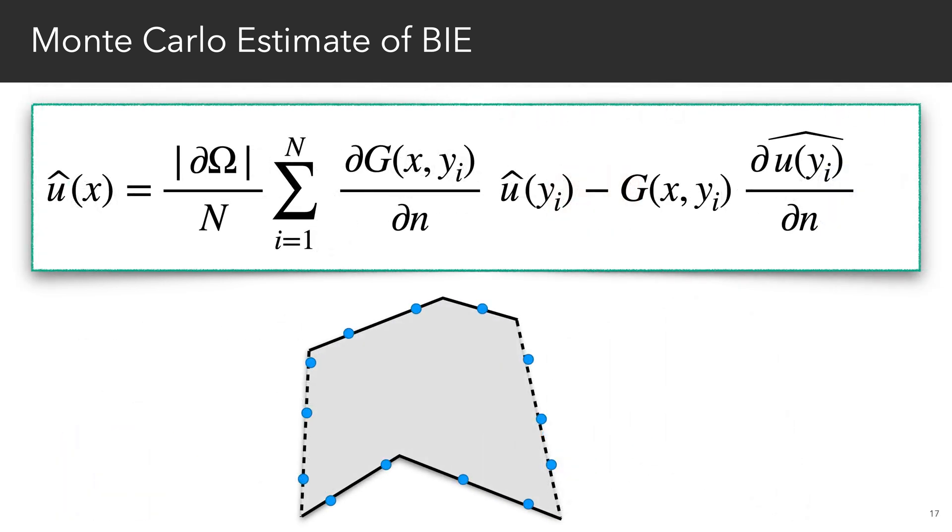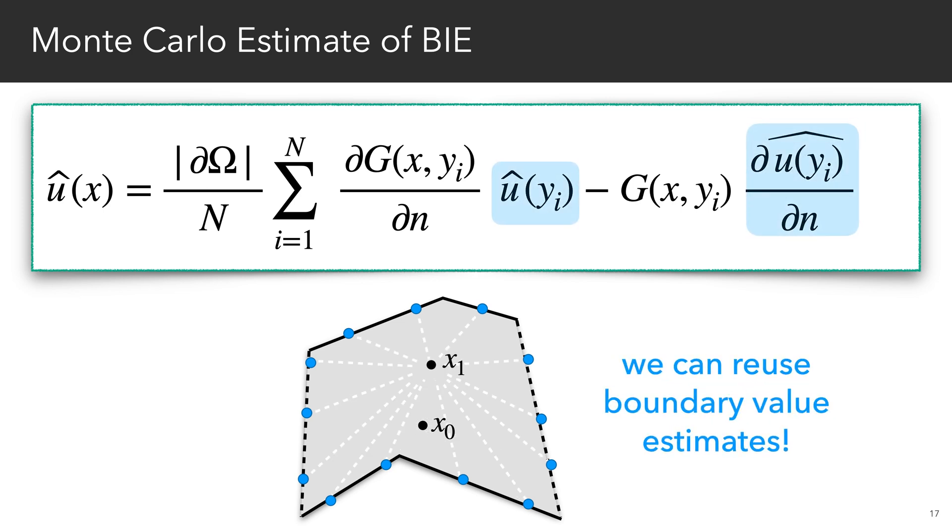Before we discuss how to estimate these boundary values, notice that the kernels in the Monte Carlo estimator for the boundary integral are the only part of the expression that relies on the position of the evaluation point x. This means that both the sample points and the estimates of the boundary values can be reused across evaluation points. This key insight is what allows us to cache and reuse boundary values for all points in the domain.